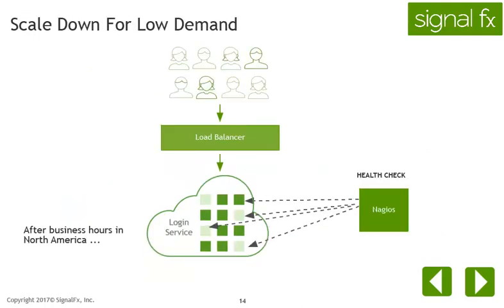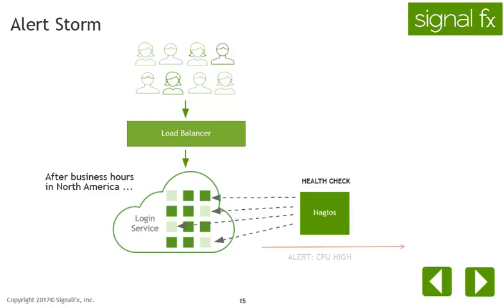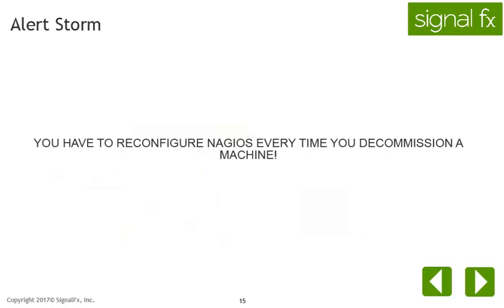After business hours, when demand is low, you scale down and take down some of the machines. What happens when you scale down and decommission some of these machines? When you take down the machines, Nagios will fire an alert because it can't see that machine. If you take down 20 machines, you will get 20 alerts. You also have to reconfigure Nagios to say that you are decommissioning these machines and to not perform the health check.